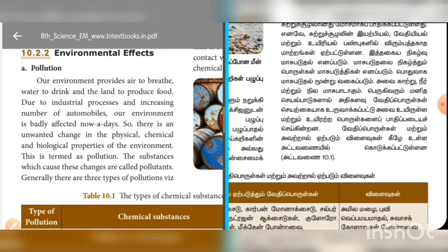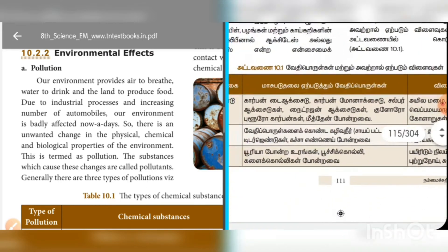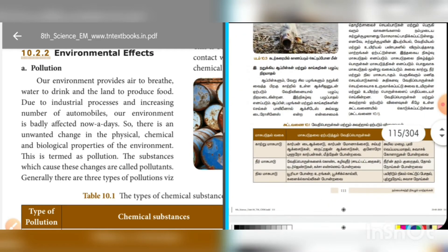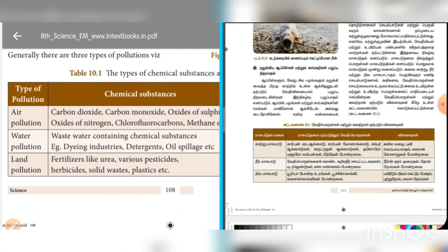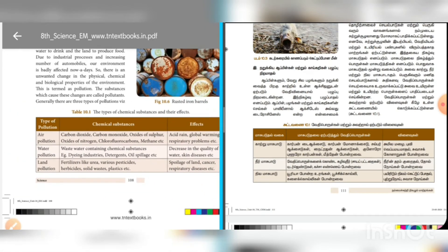There are several environmental effects to consider. Pollution in our daily life comes from industrial processes and an increasing number of automobiles, all having bad effects. Substances which cause these changes are called pollutants. There are three types of pollution: air pollution, water pollution, and land pollution.